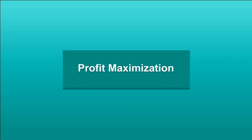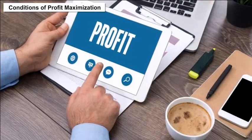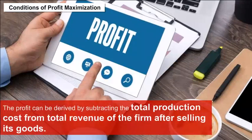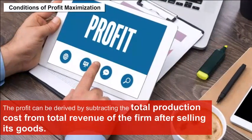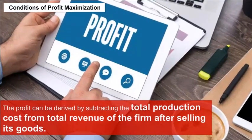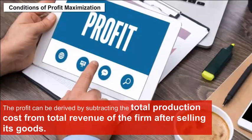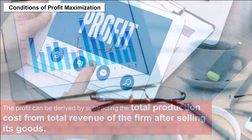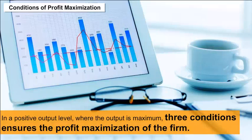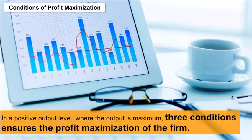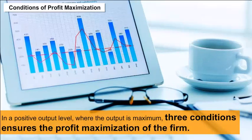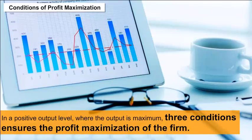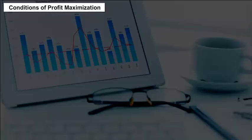Profit Maximization Conditions. The profit can be derived by subtracting the total production cost from total revenue after selling goods. At a positive output level where output is maximum, three conditions ensure the profit maximization of the firm.